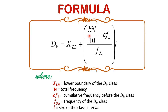For quartiles, we make use of our divisor here as 4, and for percentile, we make use of 100. So this time, since we talk about deciles, it would be 10. The rest of the terms would be the same, and how we identify the values of the following terms would be the same criteria we've used for quartiles and percentiles.